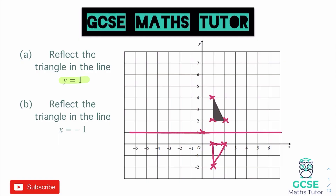It says here, reflect the triangle in the line x equals minus 1. The line x equals minus 1 — we find minus 1 on the x-axis, just here, and we draw a nice straight vertical line going upwards from that point. We follow the exact same process, but this time reflecting in this vertical line. Picking the point: that's two squares away, so two squares away. That one there is three squares away — 1, 2, 3 — just there. Drawing that up with a pencil and ruler, and there we go, it's been reflected.